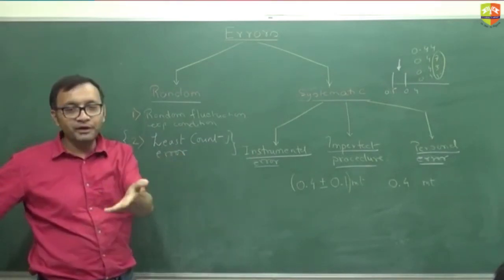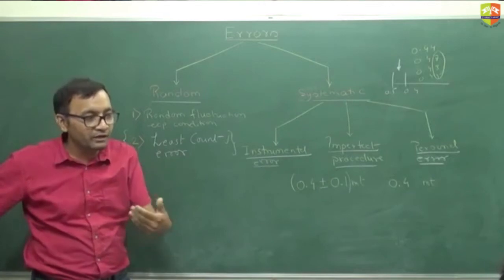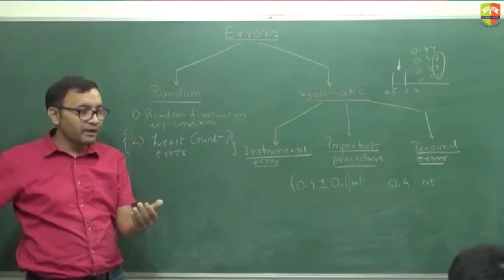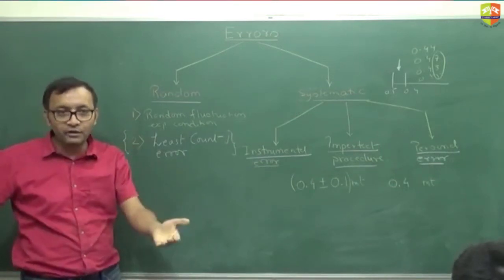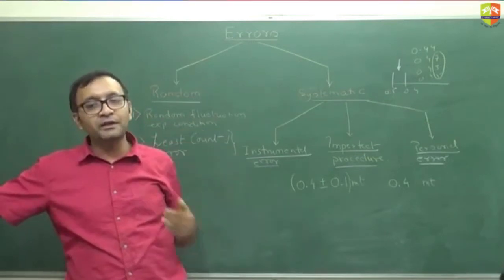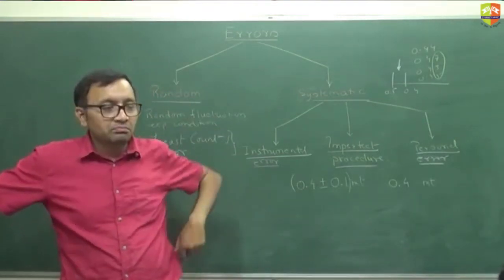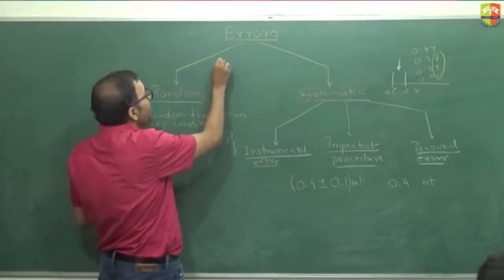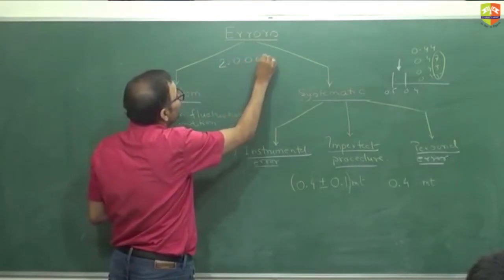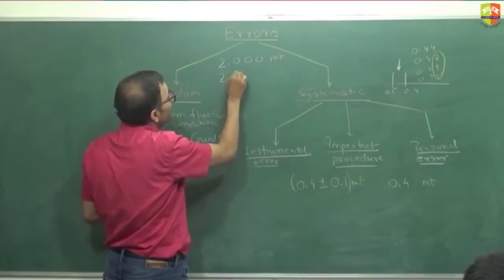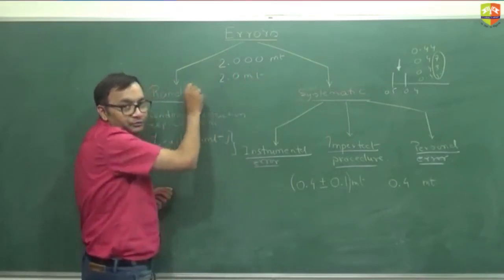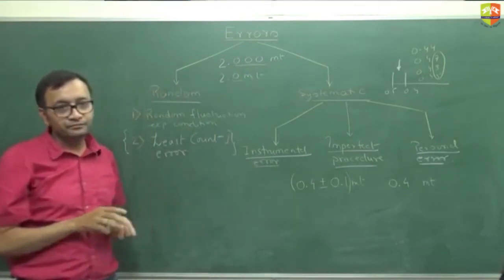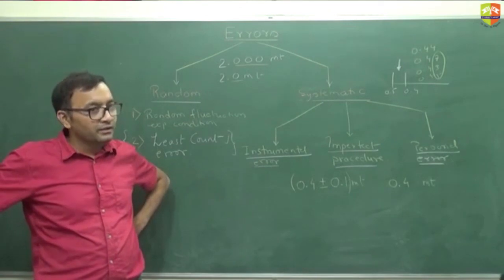That is why we have more and more accurate instruments: vernier caliper, screw gauge, and instruments accurate to four decimal places — but the fifth decimal place is still not accurate. There is a difference between writing 2.000 meters and 2.0 meters. The first is accurate to three decimal places; the second is accurate only to the first decimal place. The way you write the number makes a difference.